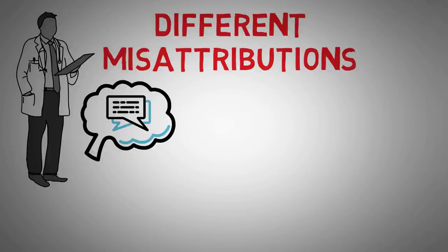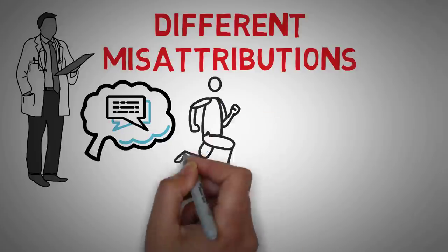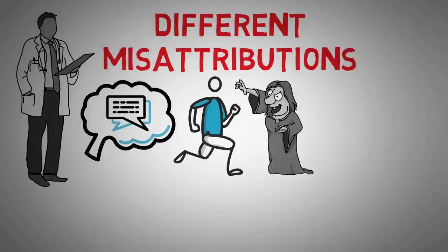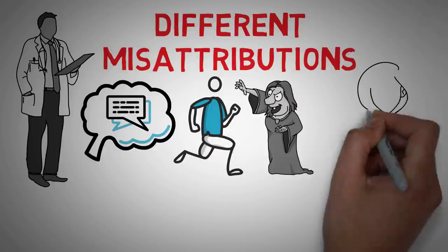The misattribution of arousal is particularly interesting because it involves completely arbitrary activities, like running or watching a scary movie, to how attractive someone else may seem to us.